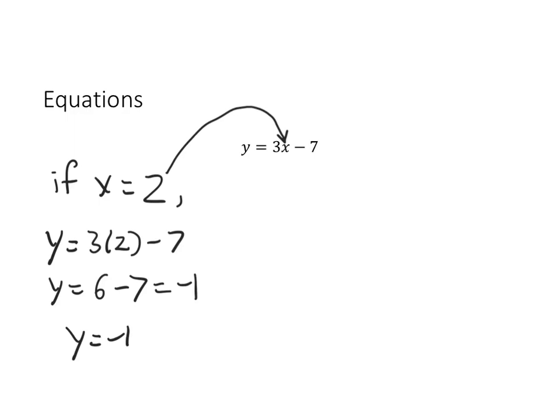We can do the same thing if we are given a value of y instead of a value of x. Suppose we want to know what value of x corresponds to y equals 5. We can say if y equals 5, and we're going to do the same thing that we did last time, then plug that value into the equation. But in this case, this is a value of y that we're given, and so it needs to go in where we see the y in the equation. So what we can say is that 5 equals 3x minus 7.